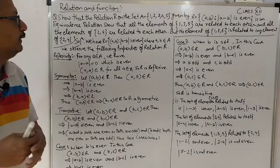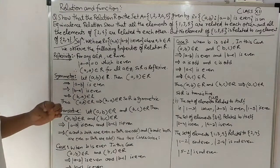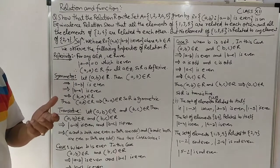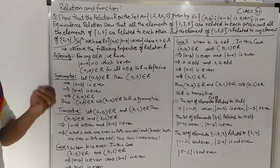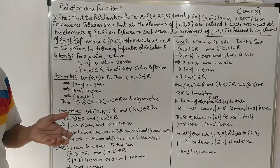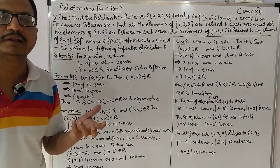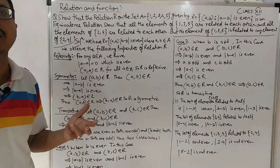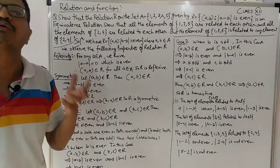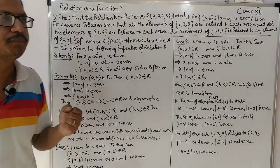अब ध्यान से देखिए। सबसे पहले आपको equivalence relation दिखाने के लिए reflexive, symmetry और transitive show करना होता है।